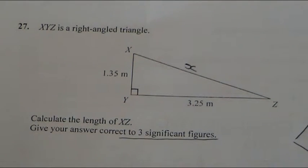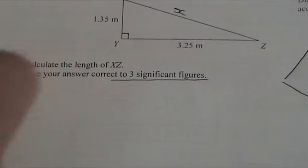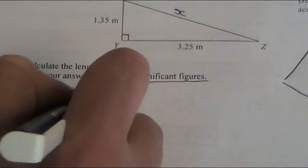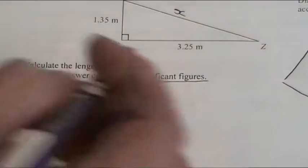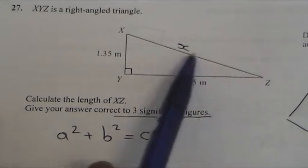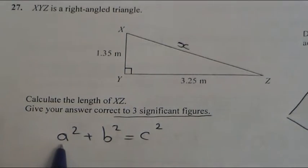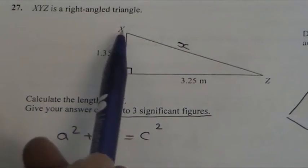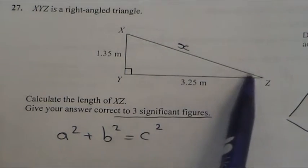So Pythagoras' theorem, most of you will probably know that it's a² plus b² equals c², where c is the longer side, so it's going to be this one, the hypotenuse, opposite the right angle. a we normally use as the smaller side, this one here, and b is the middle one.